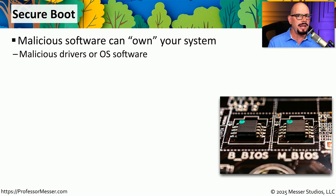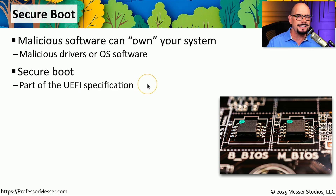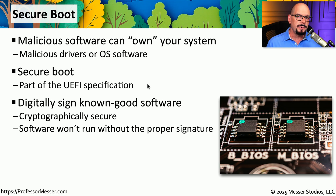Most of us probably have some type of anti-virus or anti-malware running inside of our operating system, but we also need to protect against malware that could load into your system before the operating system starts. One way to prevent malware from starting up before your operating system, or even overriding your BIOS itself, is to use a feature known as Secure Boot. This is a new feature added with the UEFI specification — you won't find this inside of a legacy BIOS system. Secure Boot has a digital signature for every well-known operating system, meaning it knows what the OS should look like. If malware makes any modification to that software, it will stop the boot process and prevent that malware from running.